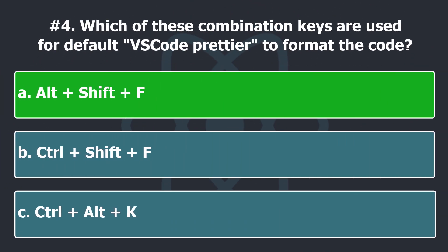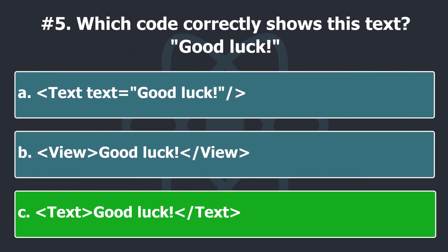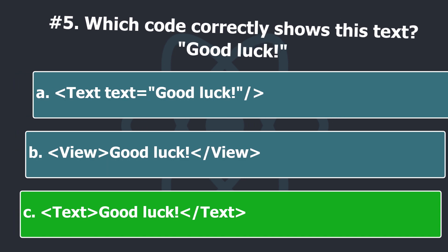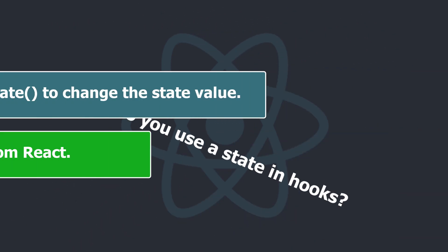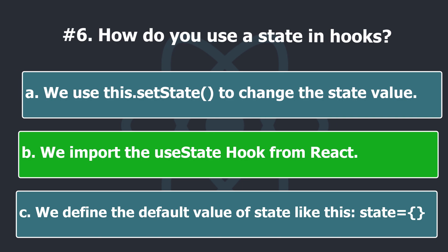We can use the default VS Code Prettier to format the code by pressing Alt, Shift, and F keys. This helps make the code more readable. We use the Text component to display text. In the Text component of React Native, the text to be displayed must be between two text tags. We import the useState hook from React — it lets us keep local state in a function component.